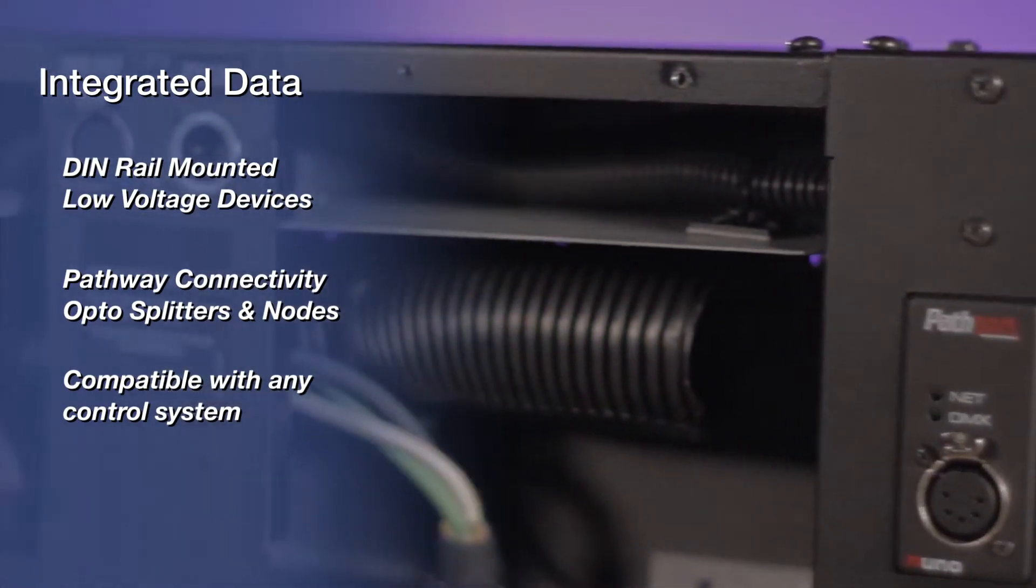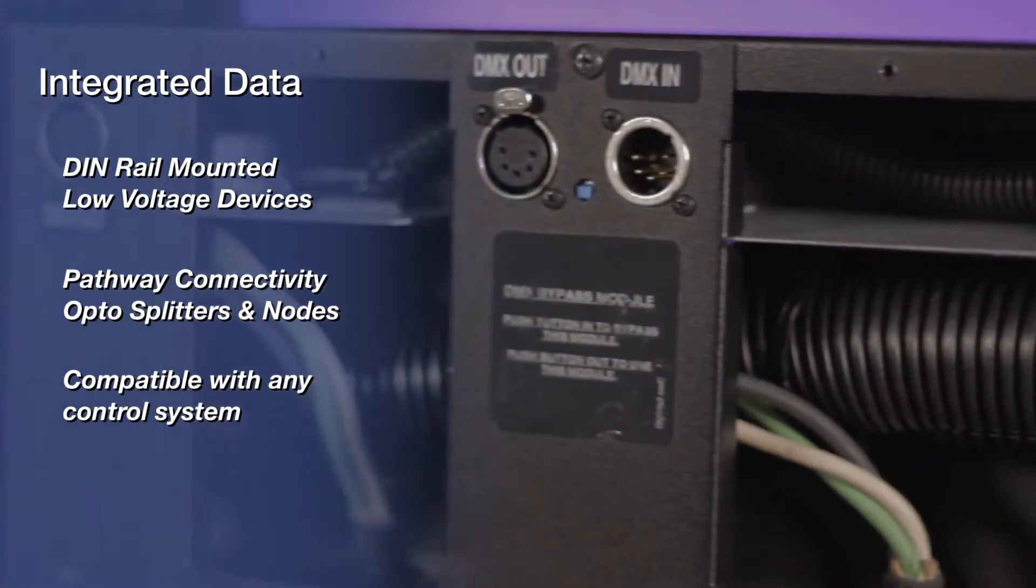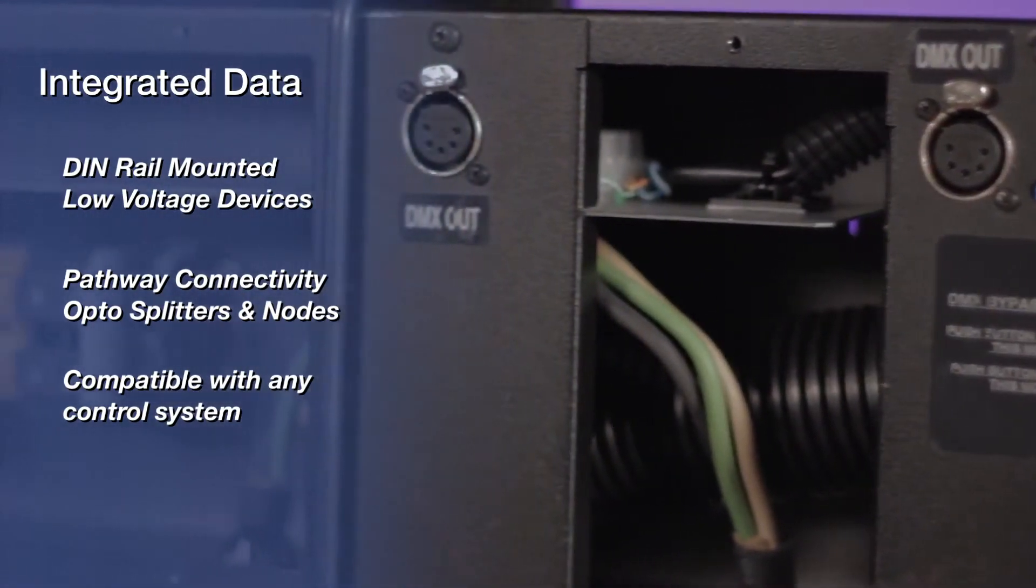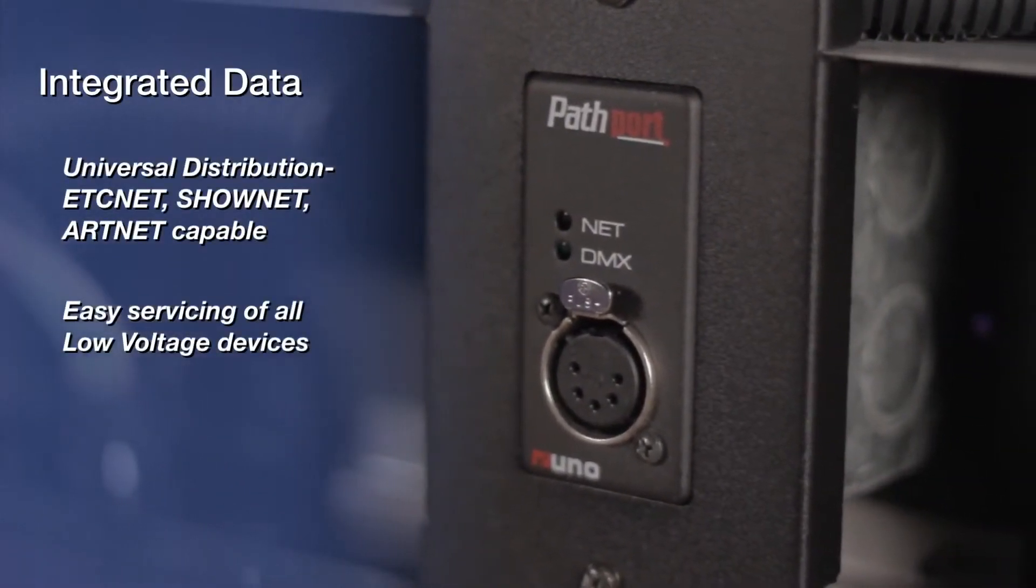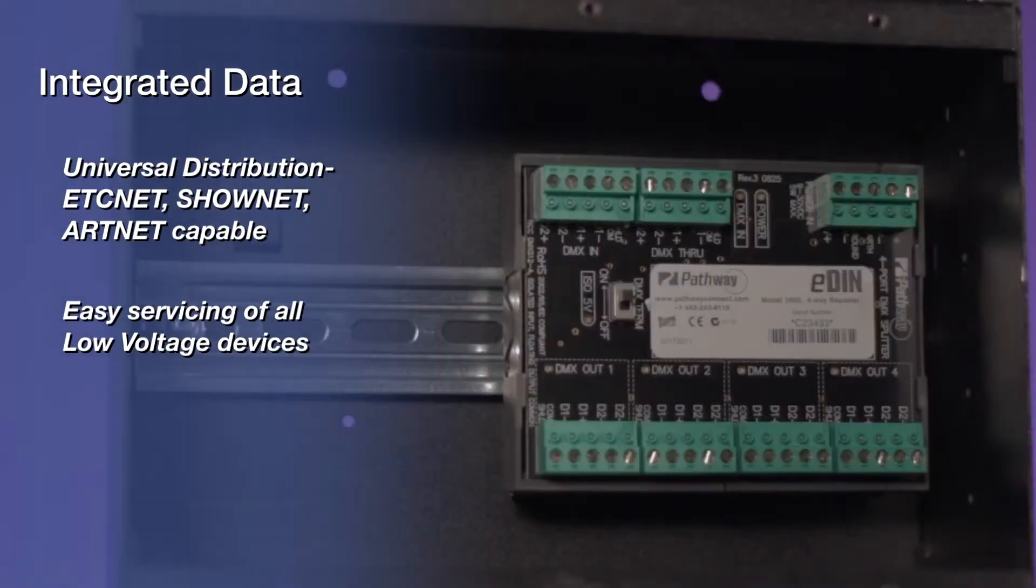The use of pathway connectivity devices ensures cross-compatibility with existing and future control protocols and provides the designer, contractor, and end user with a universal distribution system. The DIN rail allows for easy servicing of all low voltage devices.